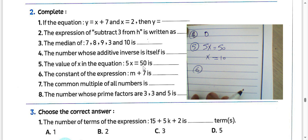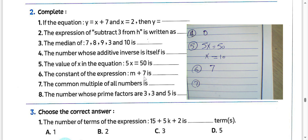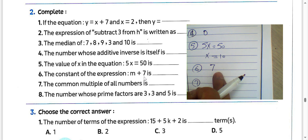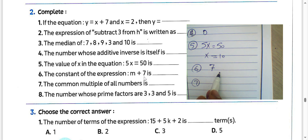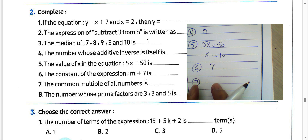Question number 6: the constant in the expression will be 7. We call 7 a constant because there is no variable behind it. To identify the constant, you must choose the number in the expression that has no variable attached to it.